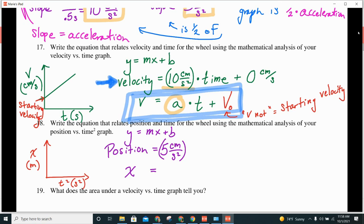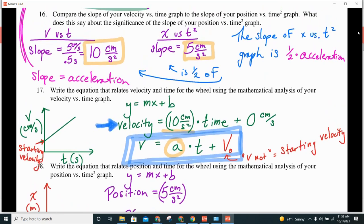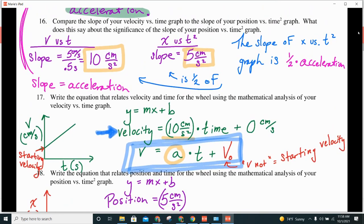Now, a minute ago, we said what that slope meant up here when we did number 16. What is the slope of our position versus time squared graph? The slope of the position versus time squared graph is? One half of my acceleration.